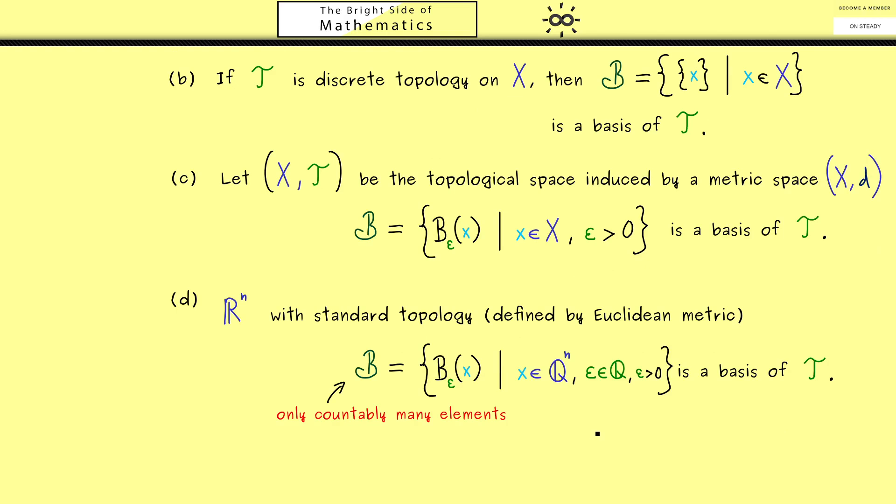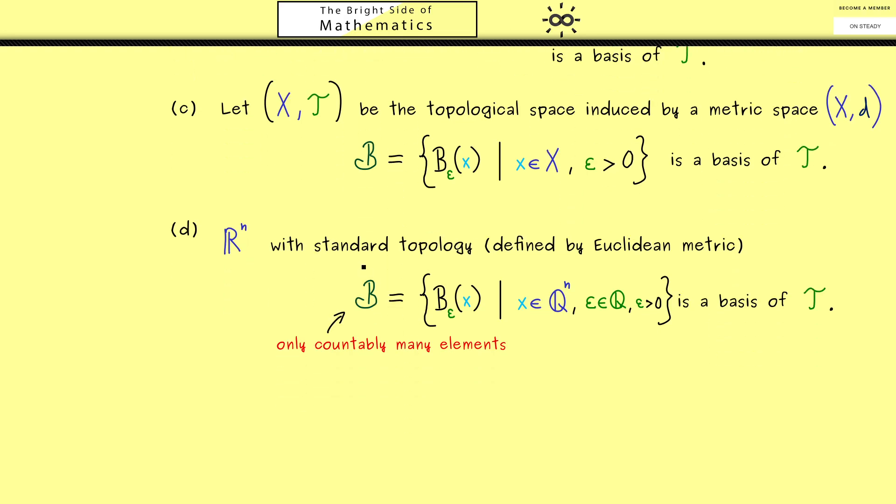So this is very nice, because when we work with this basis, we only need the unions with countably many elements. Therefore we can say this is a nice property of the topology, and this is what we should fix in the next definition.